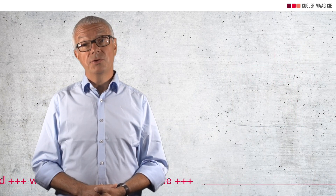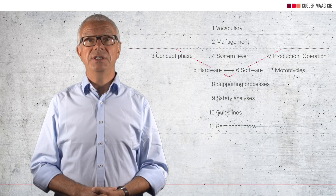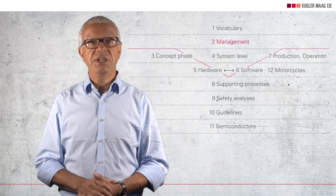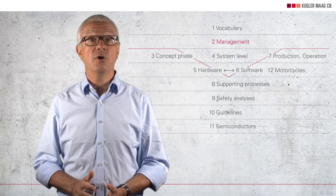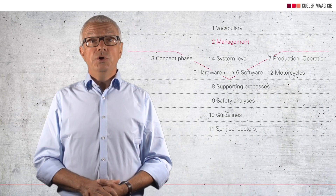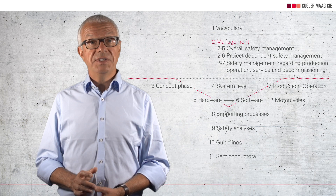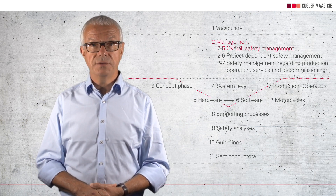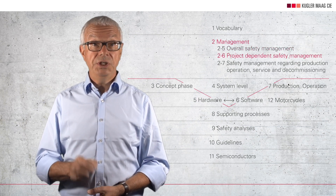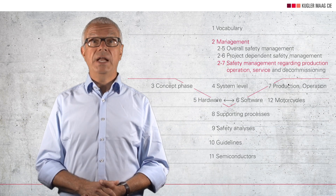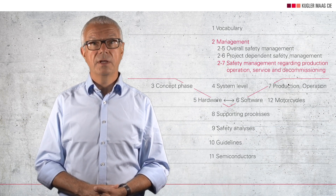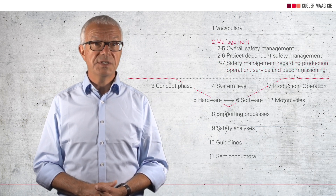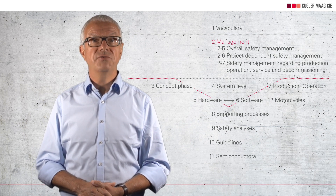Let's have a look into ISO 26262. Part 2 is especially dedicated to the management aspect of the whole safety lifecycle. Part 2 in particular says how to manage the topic of functional safety. You'll find three clauses with requirements in Part 2. The first relates to the development organization, the second is related to each development project, and the third relates to the post-development phase. In a number of other clauses of ISO 26262 there are further requirements that are closely related to managing functional safety.